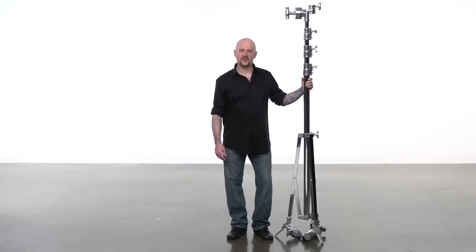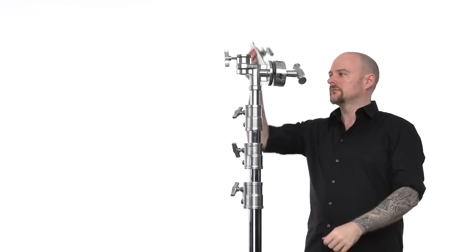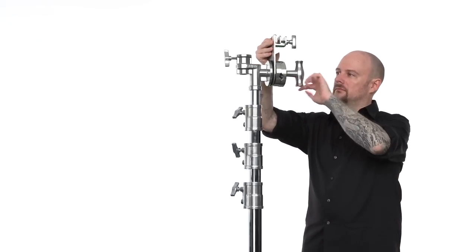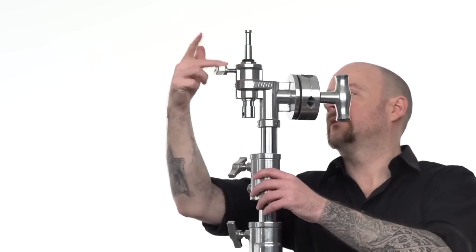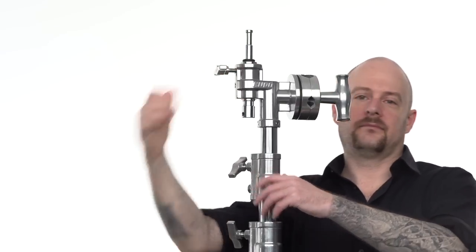These lollipop heads are commonly used to support overhead frames due to their increased strength. This is also where the stands get their name from. The junior receiver gives you the option of mounting any junior 1 1/8 inch accessory.